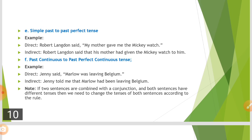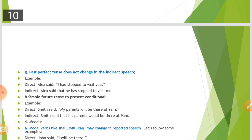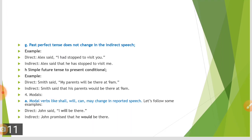If two sentences are combined with a conjunction and both have different tenses, we need to change the tenses of both sentences according to the rule. When two sentences are connected to each other, we need to change those sentences accordingly. Importantly, past perfect tense does not change in direct to indirect speech — because it is already in the past perfect. For example: 'Alex said, I had stopped to visit you' becomes 'Alex said that he had stopped to visit me.'